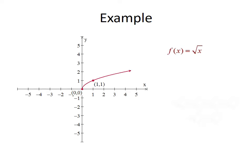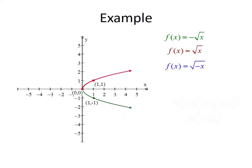For example, if we consider f(x) = √x, we can use that to graph f(x) = -√x. Since the minus sign is outside of the square root function, this is a reflection over the x-axis. We can also do f(x) = √(-x). Since the minus sign occurs inside the square root sign, that gives us a reflection about the y-axis, producing the graph of √(-x).